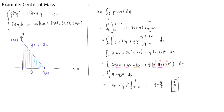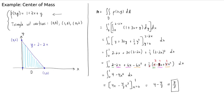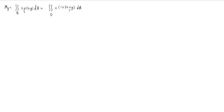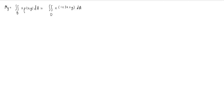We next need to compute the moments of mass, and then we can find the center of mass. The moment M_y is the double integral over D of x times rho(x,y) dA. So this is the double integral of x times (1 plus 3x plus y) dA over the same type 1 region. Everything is very similar, except we have this extra factor of x.